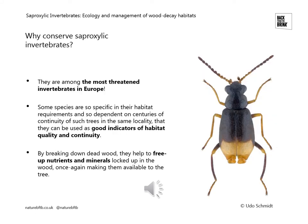Why should we conserve saproxylic invertebrates? Firstly, they are among the most threatened invertebrate groups within Europe. They are also really valuable as indicators: some species are so specific in their habitat requirements and so dependent upon centuries of trees being present in the same locality that their presence is a good indicator of both habitat quality and continuity of woodland environments. By breaking down dead wood, they also help to free up nutrients and minerals locked up in that wood, making them available to the tree again — effectively prolonging the life of our ancient and veteran trees.